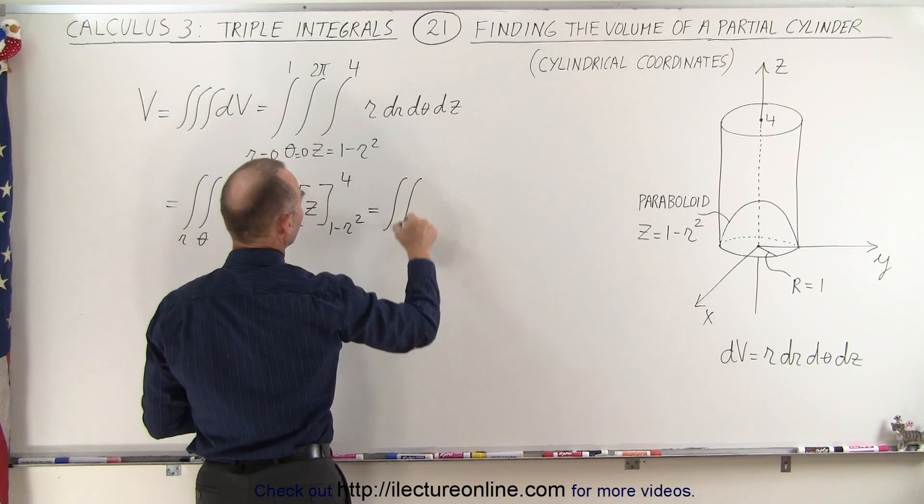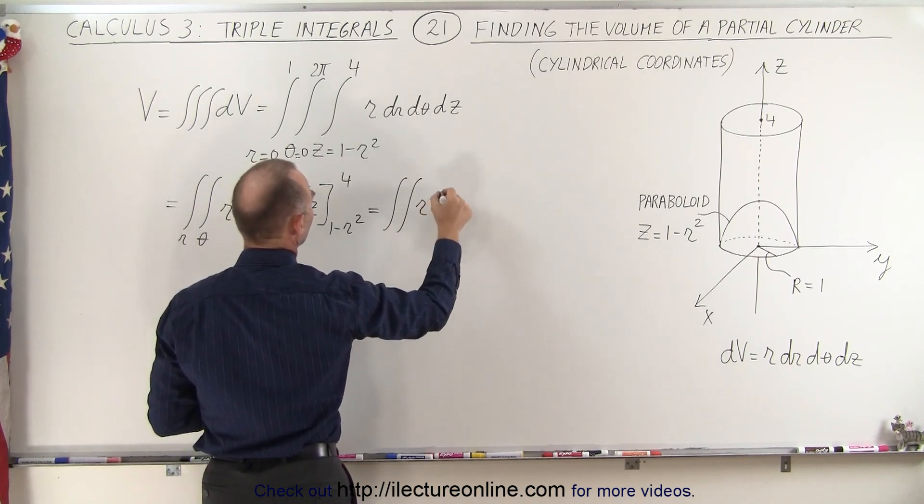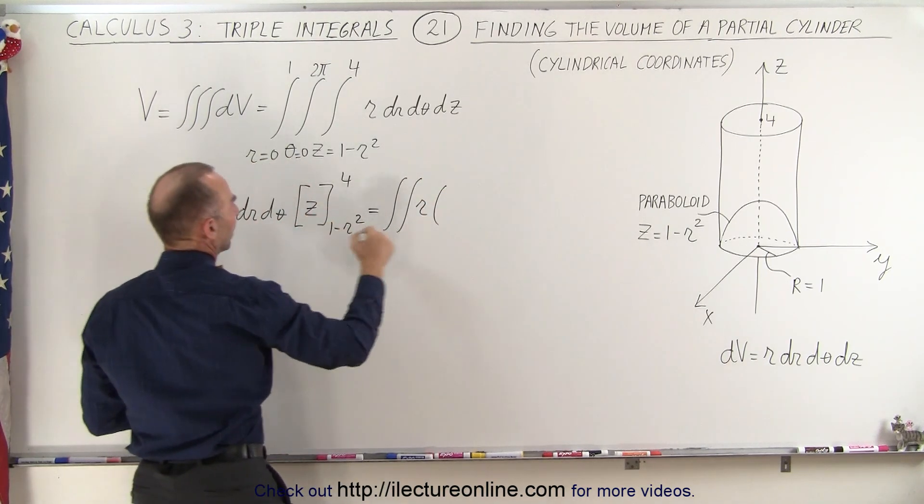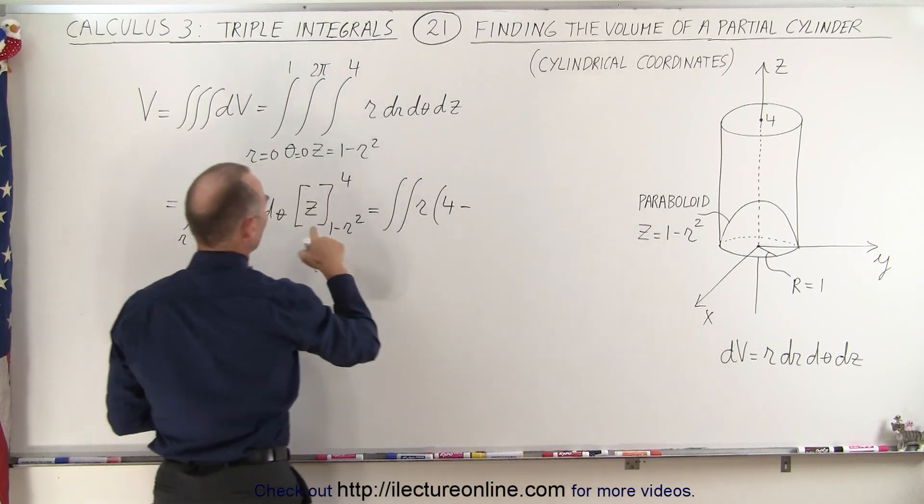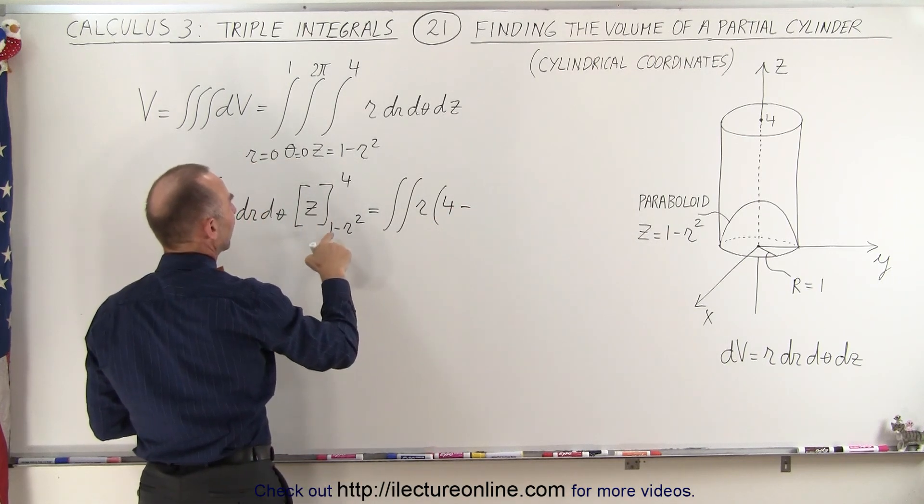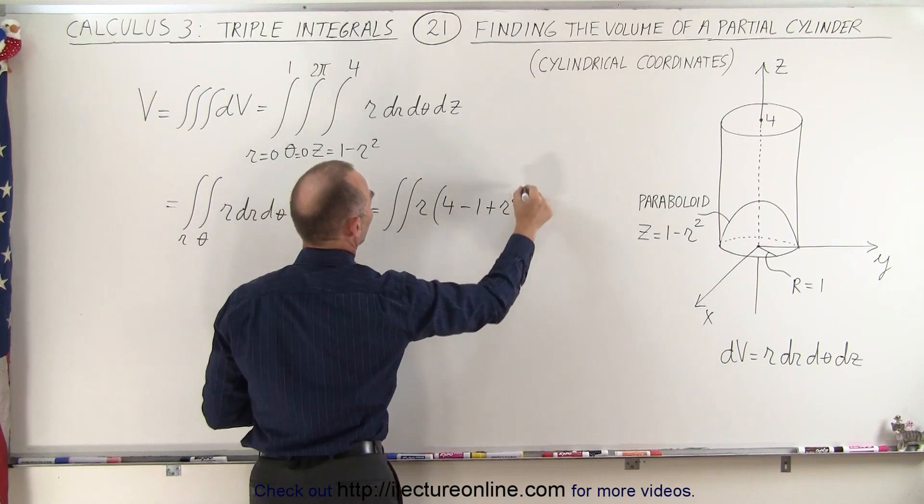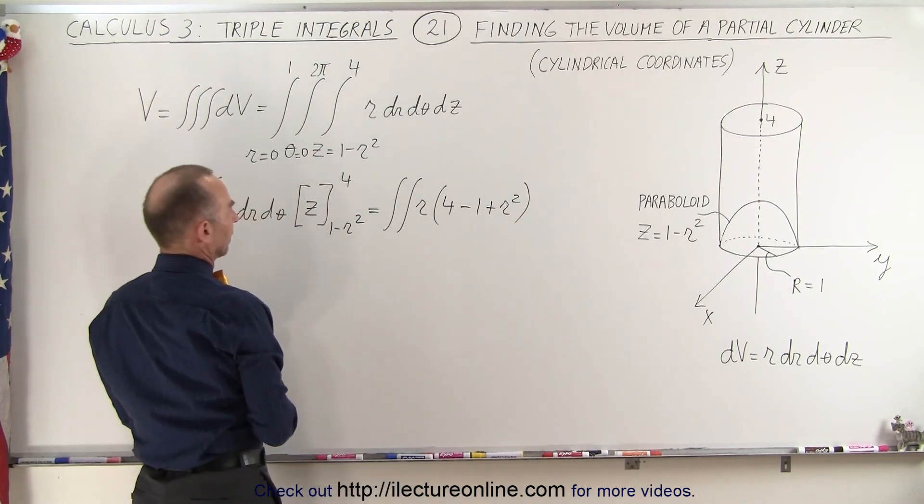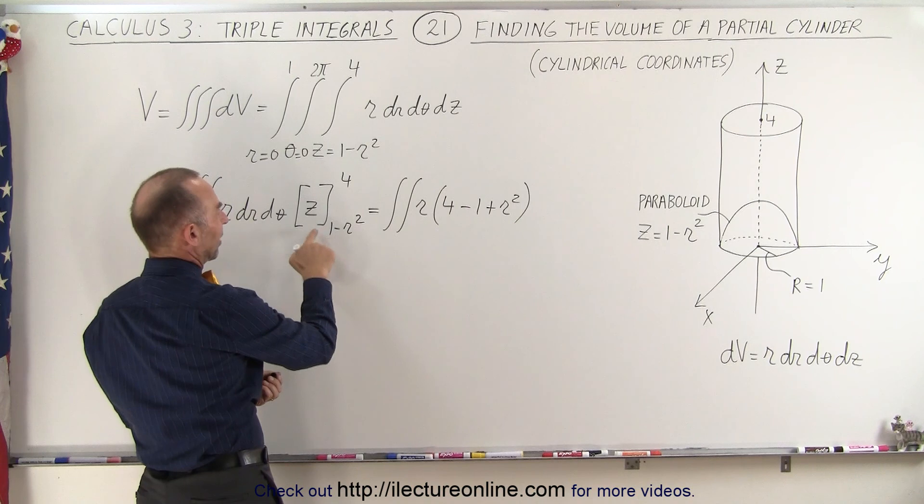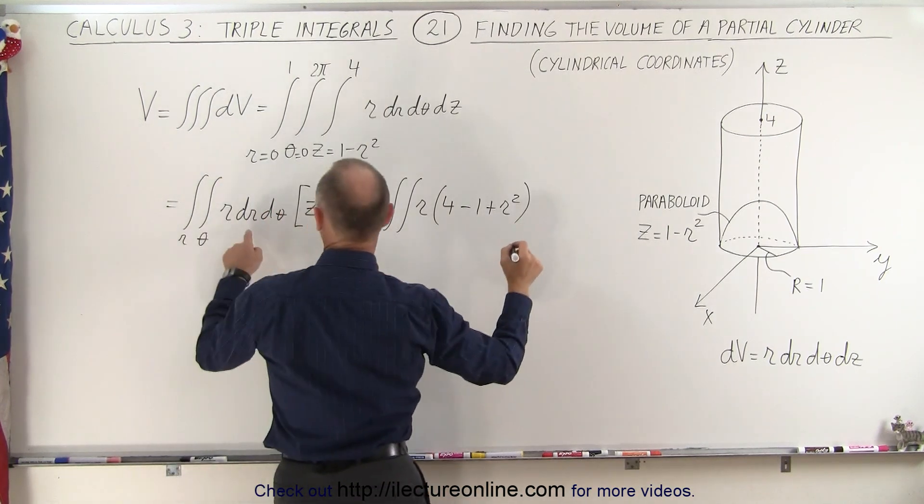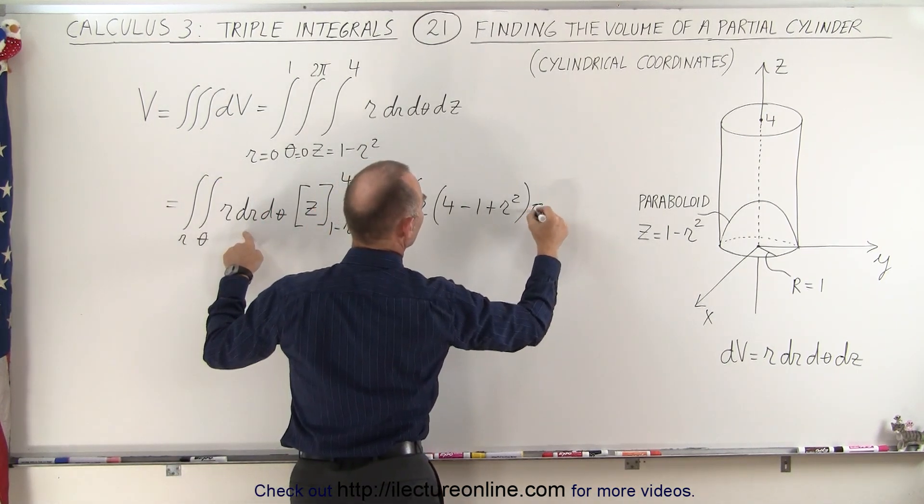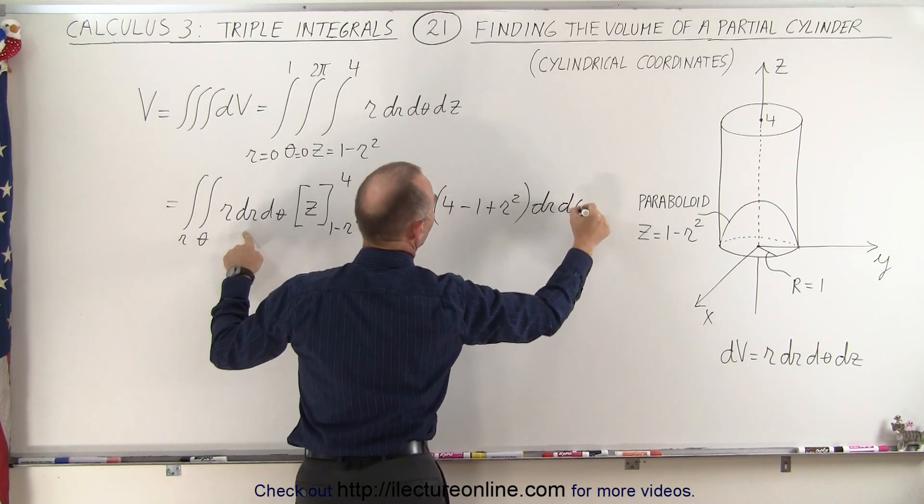We get the double integral of r times, plug in the upper limit, we get 4 minus when we plug in the lower limit, we get 1 minus r squared. That becomes minus 1 plus r squared. Just got to be careful with the negative sign. We subtract this, so minus 1 plus r squared. Then we still have the dr and dθ left.